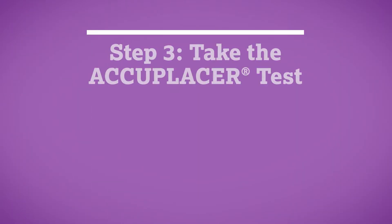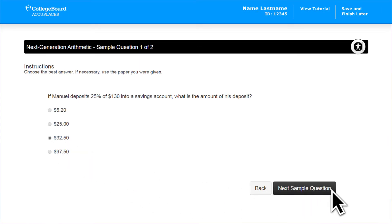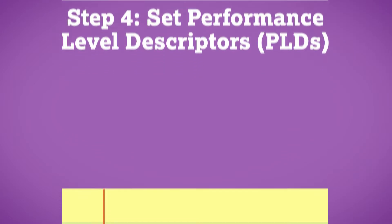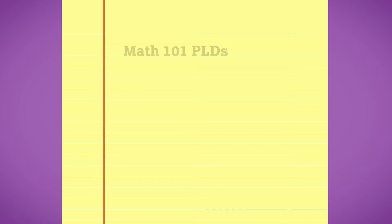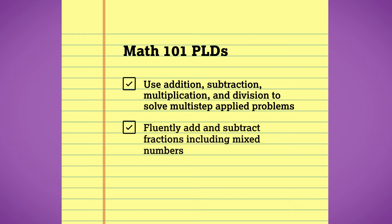Use this information along with course objectives to determine your placement requirements. Next, have panelists take each Accuplacer test so they can further review test item format and test content in a real, live setting. Finally, set performance level descriptors, or PLDs. These define the minimal level of performance needed for successful placement in each course and will allow you to tailor placement scores to your student population.